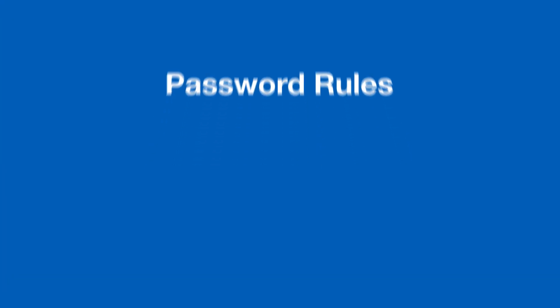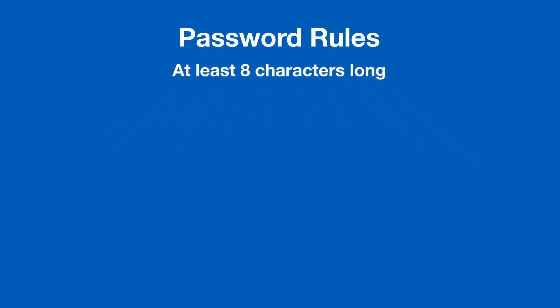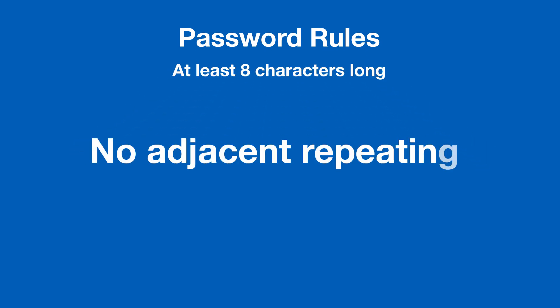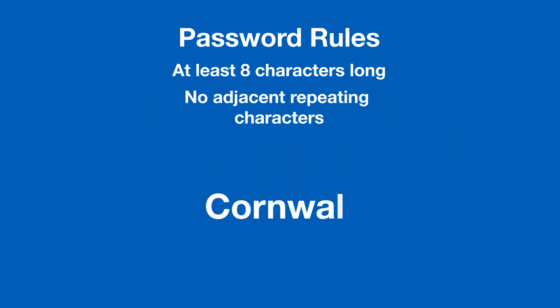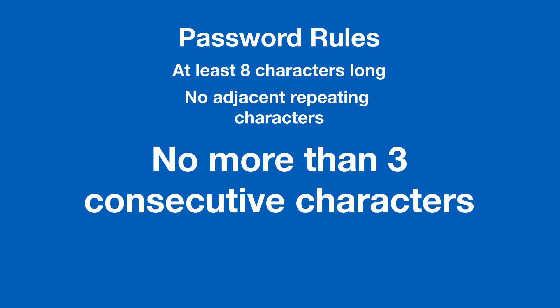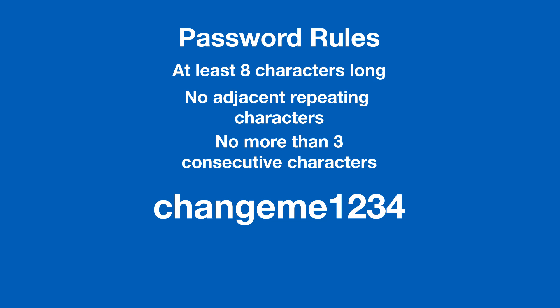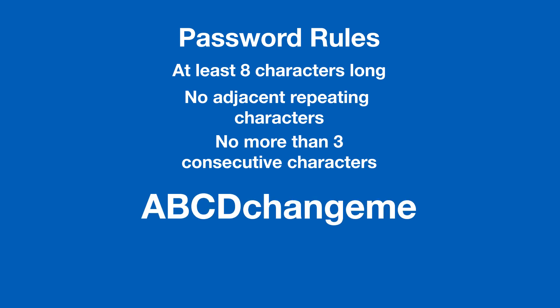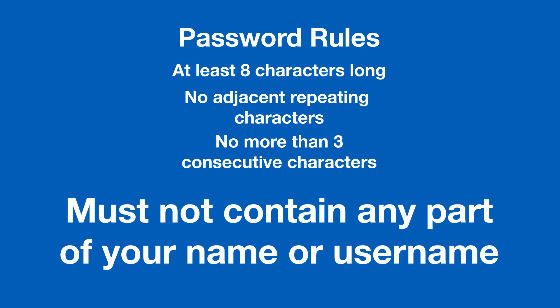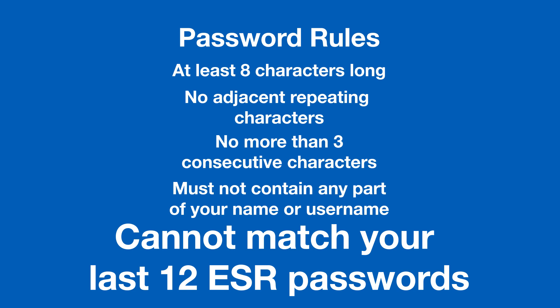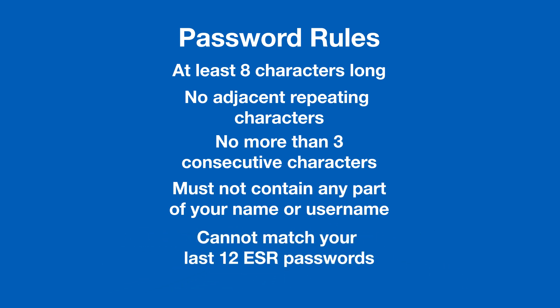Your new password will need to meet the following criteria. It will need to be at least 8 characters long. It must not include any adjacent repeating characters, like Cornwall with 2 L's or Waterloo with 2 O's. It can't contain more than 3 consecutive characters — for example, in the password ChangeMe1234, the 1234 would be invalid, or ABCD ChangeMe, the ABCD would be invalid. It can't contain any part of your name or username, and it cannot match any of the last 12 passwords you've used for ESR.